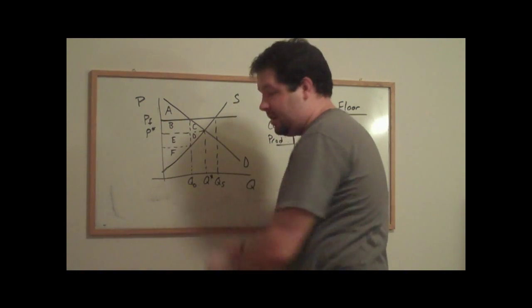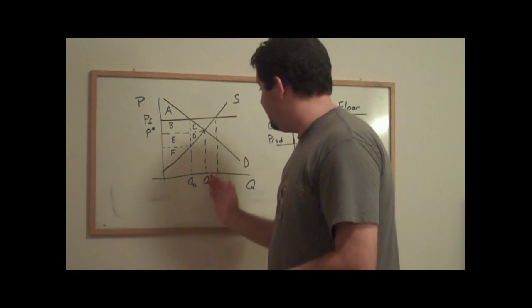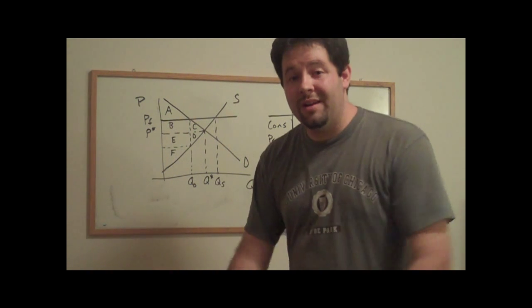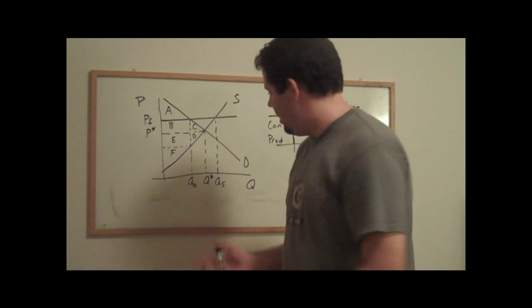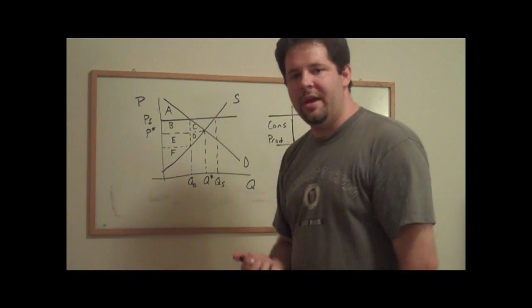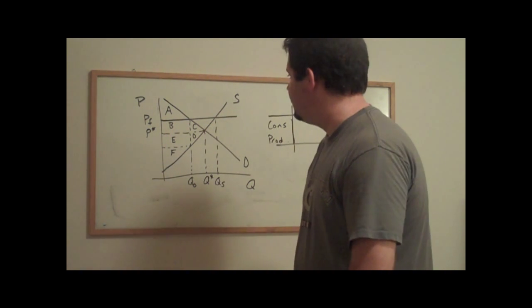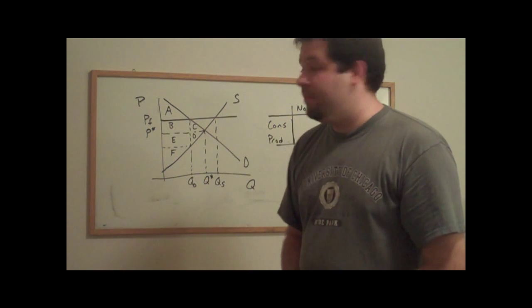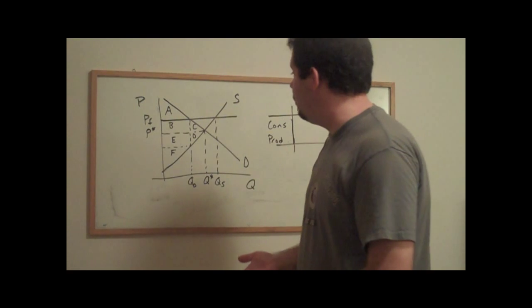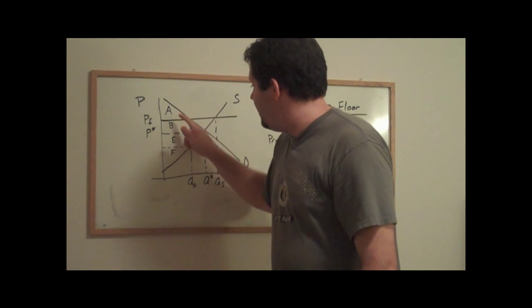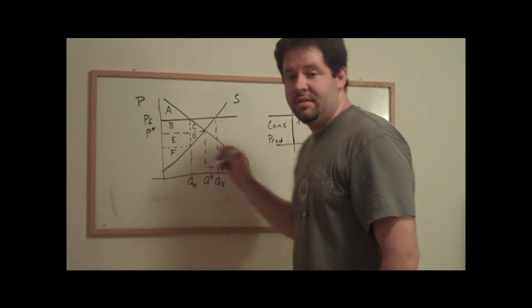The suppliers are going to produce more than there is demanded. The difference between QS and QD is a surplus, and we're going to take the minimum of those two to see what quantity is actually traded. The suppliers can't force the demanders to buy them. The consumer surplus initially was A plus B plus C, and producer surplus is E plus D plus F.